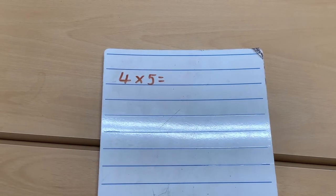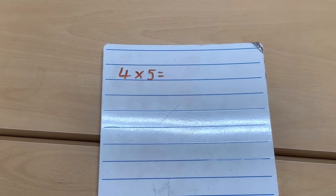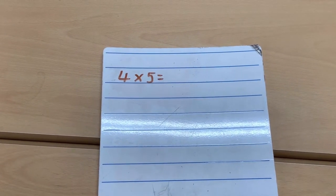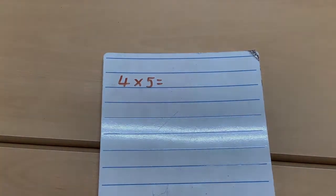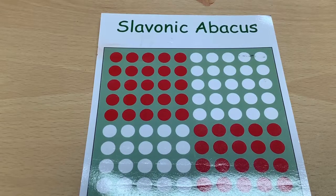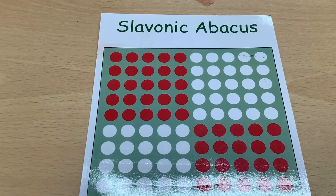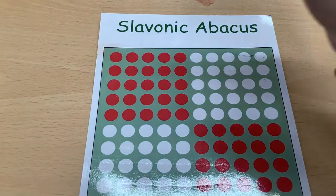This time we're going to have a look at 4 multiplied by 5 as an array. I'm going to use the Slavonic abacus to do this. And you've got one of these in your resource pack at home.